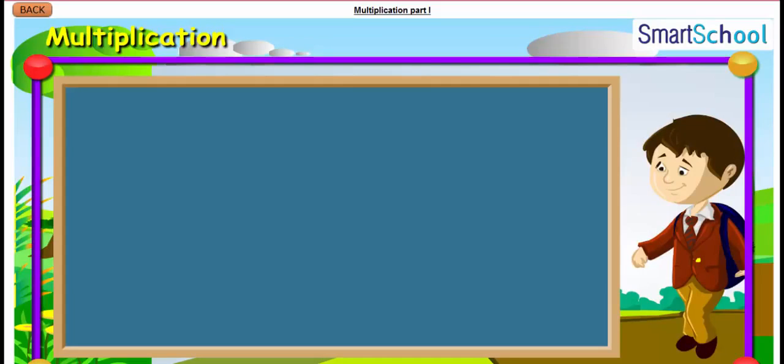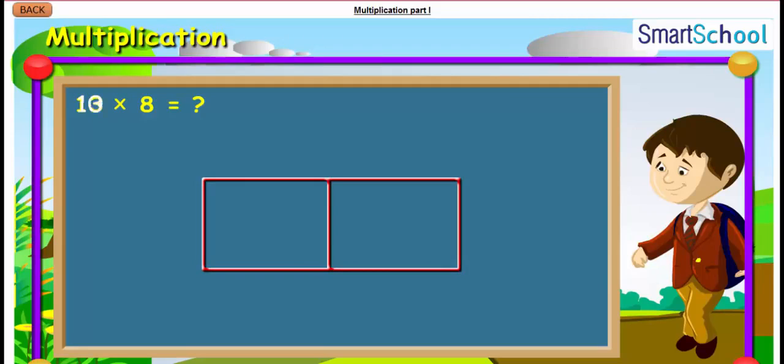Let us see the example. Let us multiply 13 into 8. Here, if we break 13 as 10 plus 3 and then multiply,